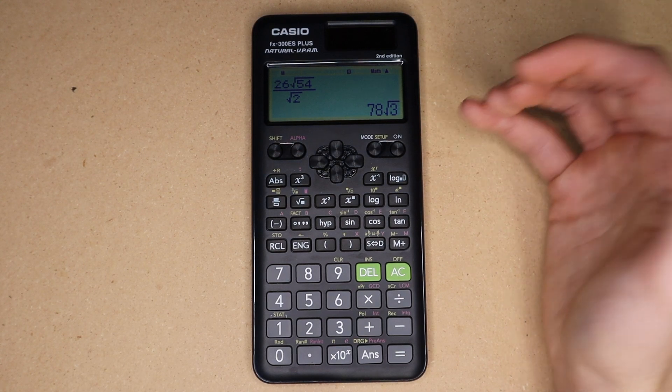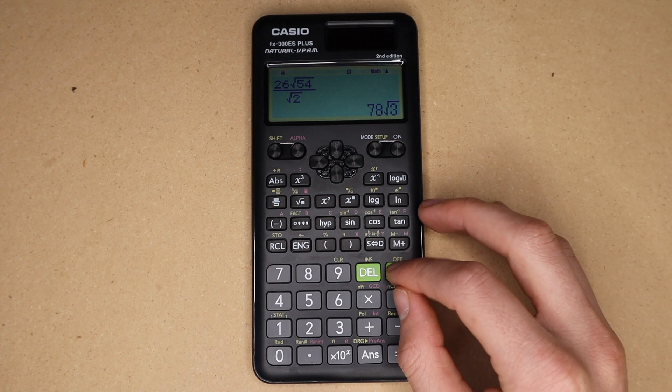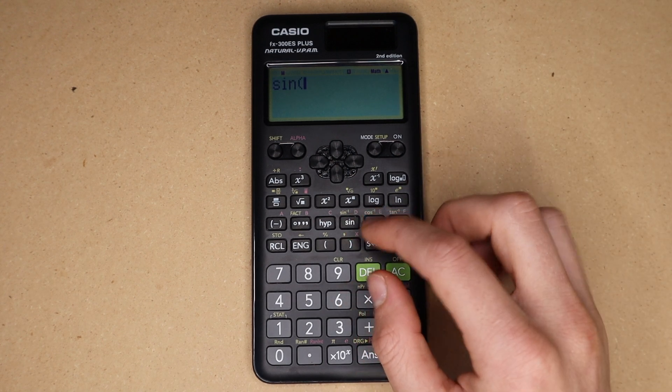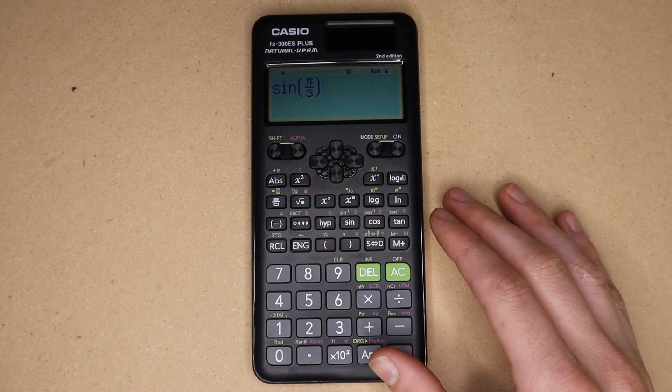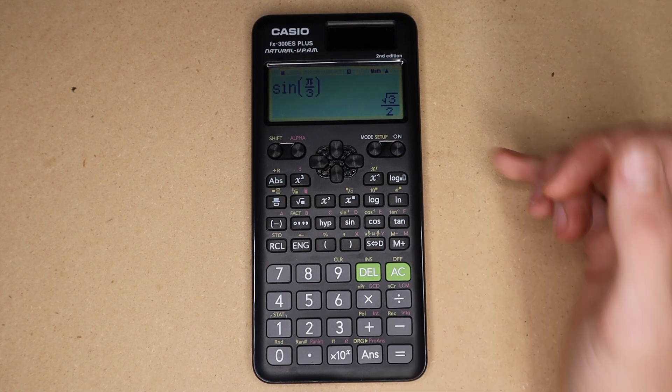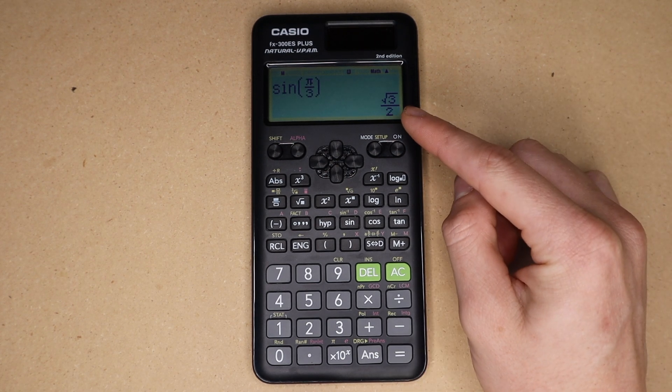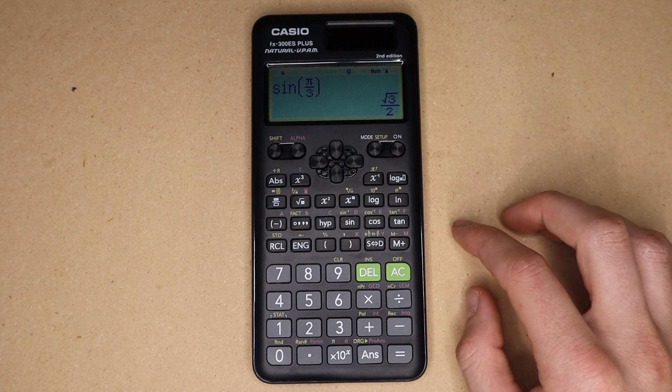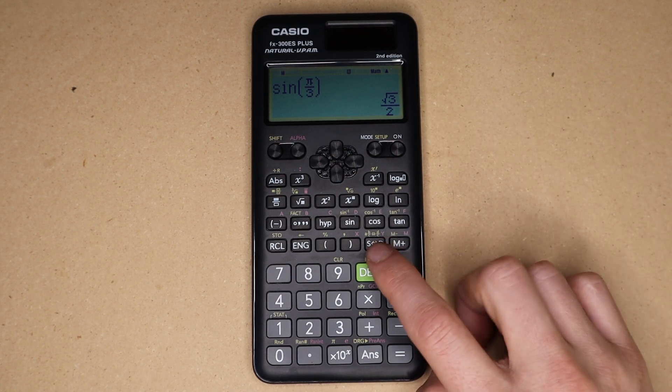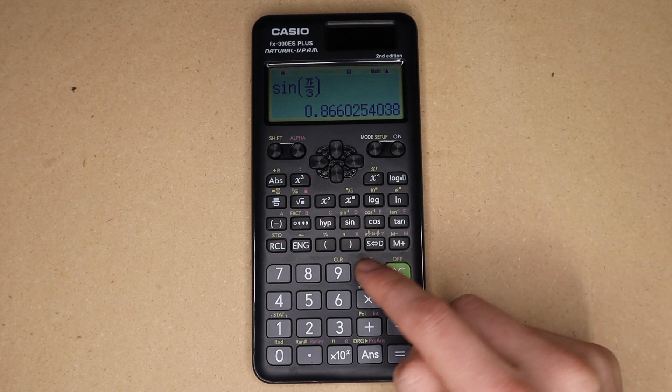And then also for common trig functions, here for example sine of pi over 3, it will give you the exact answer for expressions like that. And then of course if at any time you want your answer in decimal form you can just press this button right here to toggle between exact and decimal form answers.